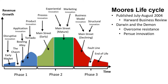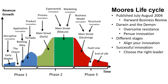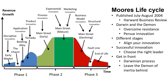Innovation comes in products, processes, marketing, business models, and more. What kind of innovation you should pursue depends on where your product is placed in the lifecycle. Moore's model contains different stages in the Market Lifecycle, and you have to align your innovation with each of these stages. To have successful innovation, you must also choose the right leader and sponsor for the innovation project. You have to get in front of this Darwinian process and leave the demon of inertia against innovation behind you.